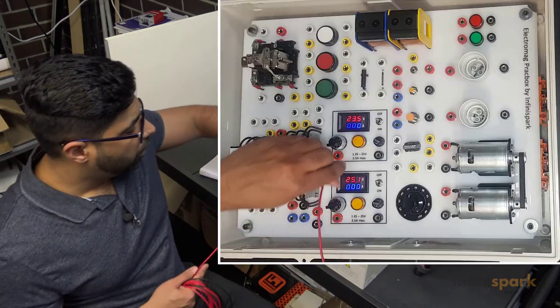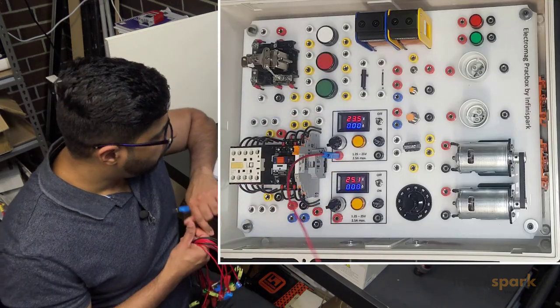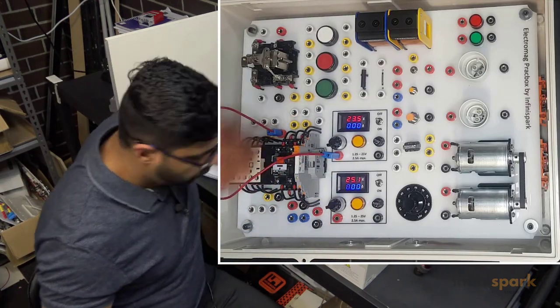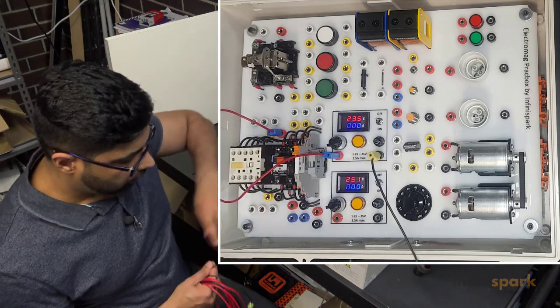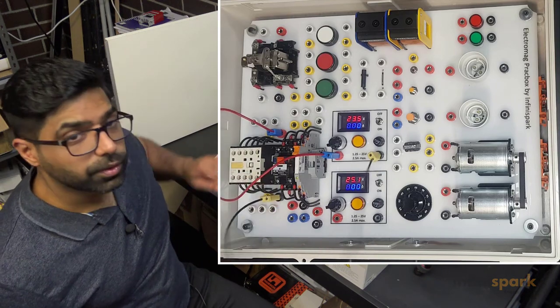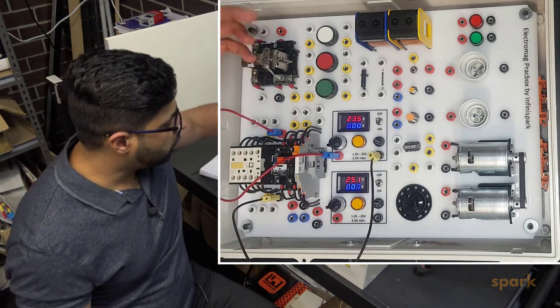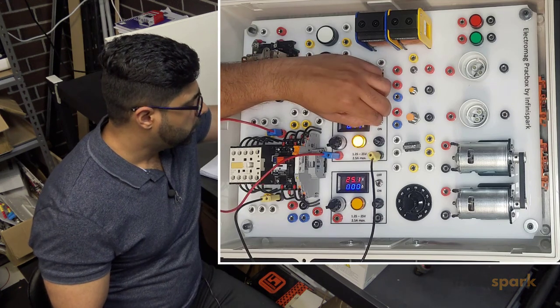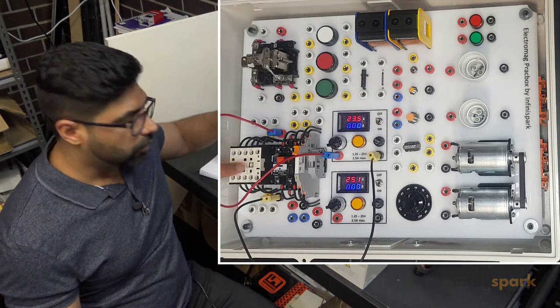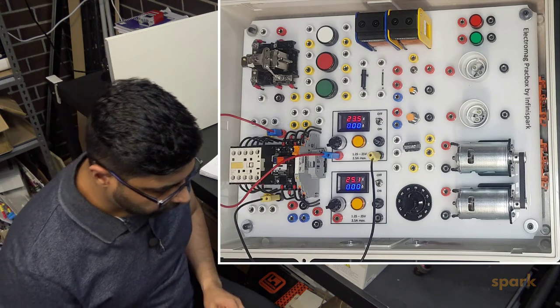Positive of my power supply goes to positive of the contactor, and negative goes to the negative side of the contactor coil. Let's turn it on to test if we wired it correctly. We can see how this contactor turns on when I turn that on, so that's wired correctly. That's the control circuit.